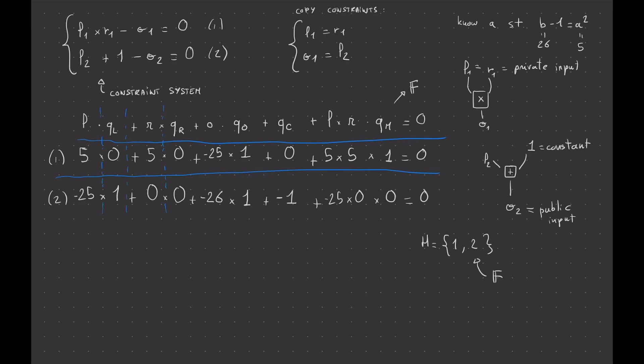Plonk is a universal zero-knowledge proof system. Universal means you can use it to prove any type of circuit — different circuits — you're not limited to one, unlike Groth16 or other proof systems where you set it up for one circuit only. With Plonk you can use it for any circuit you want, except that the number of gates is upper-bounded by the size of your field.